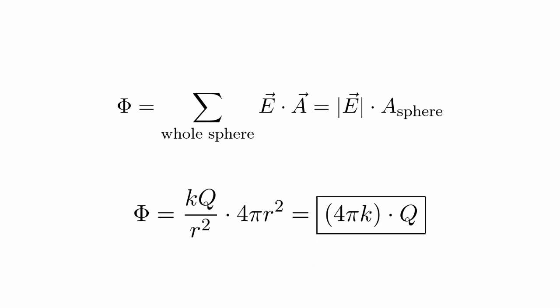This feels interesting because we can see that the flux doesn't actually depend on the size of our sphere. And that should make sense because the electric field is inversely proportional to the radius squared, whereas the surface area of the sphere is proportional to the radius squared. So these two cancel each other out, and no matter how large our sphere is, it doesn't actually affect the amount of flux going through it.